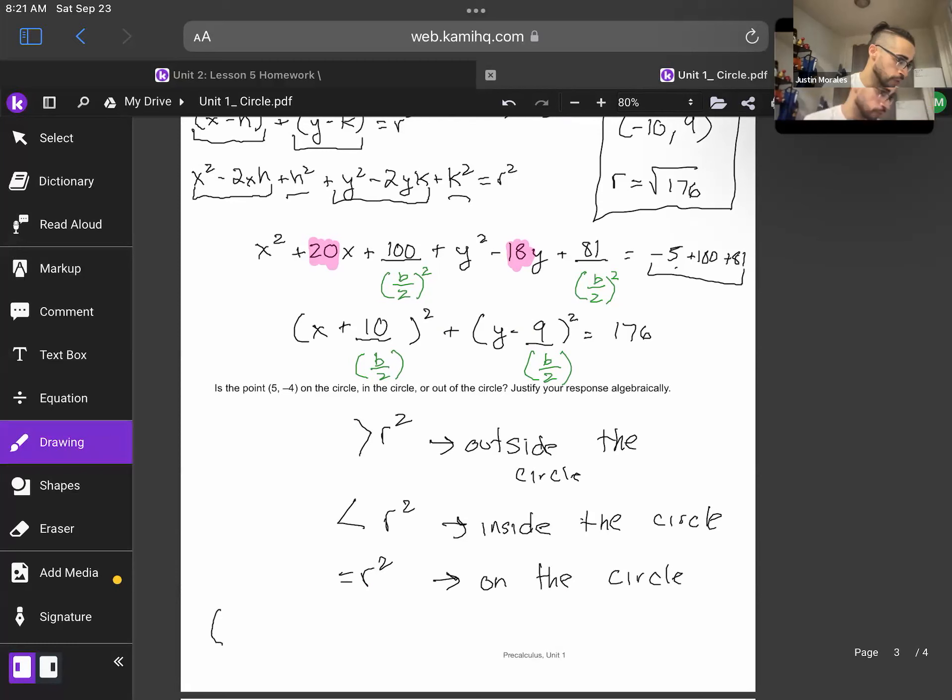So we're going to go ahead and do (5 + 10)² + (-4 - 9)². And we're trying to see what would that be equal to? Is that going to be greater than 176, less than 176, or equal to 176? So 5 plus 10 is 15, and 15 squared is going to be 225. Negative 4 minus 9 is going to be 13, and 13 squared is 169. So now we just have to do 169 plus 225, which is 394.